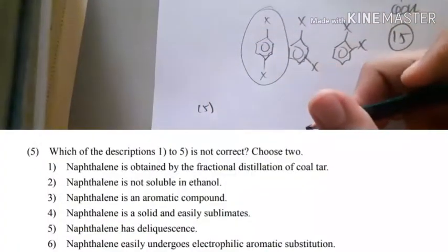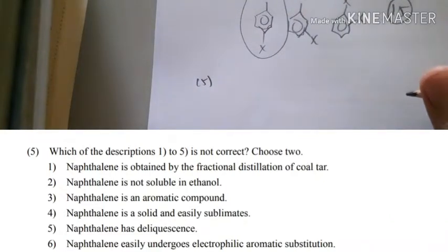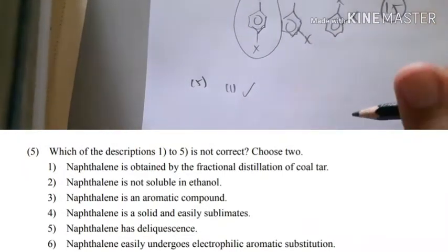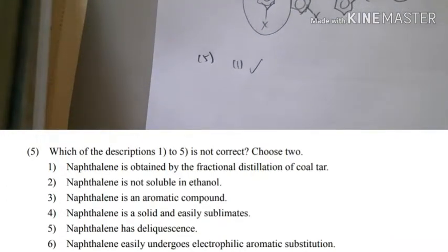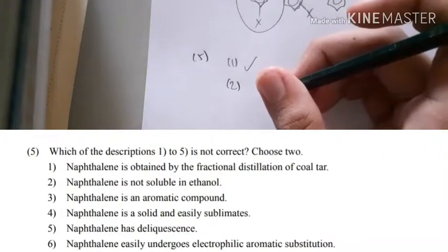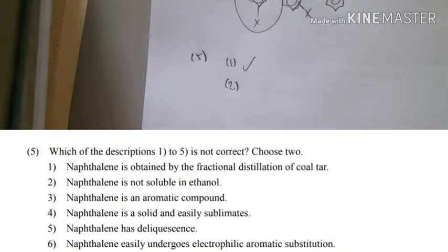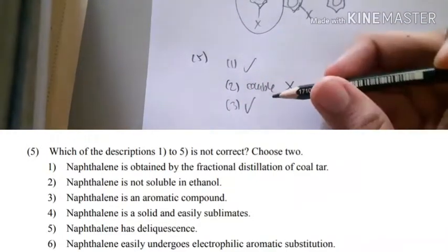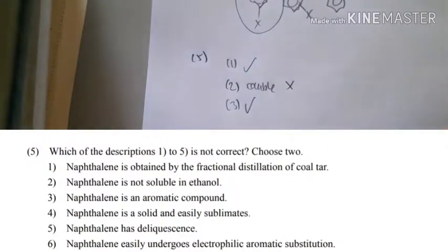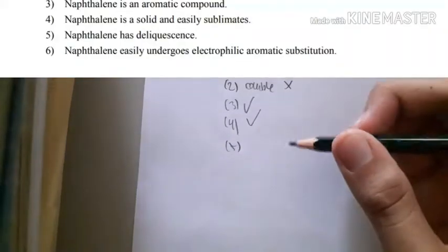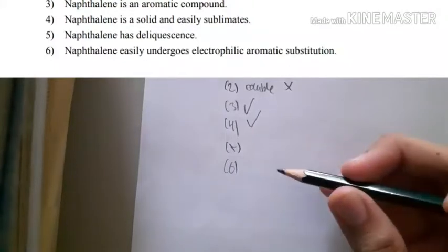Number five asks which description of naphthalene is not correct. Statement one: naphthalene is obtained by fractional distillation of coal tar — this is true; naphthalene, benzene, phenol, and all types of benzene derivatives are found in fractional distillation of coal tar. Statement two: naphthalene is not soluble in ethanol — actually naphthalene in ethanol is soluble, so statement two is false. Statement three: naphthalene is aromatic — of course, naphthalene, benzene, anthracene, phenanthrene, and pyrene are all aromatic.